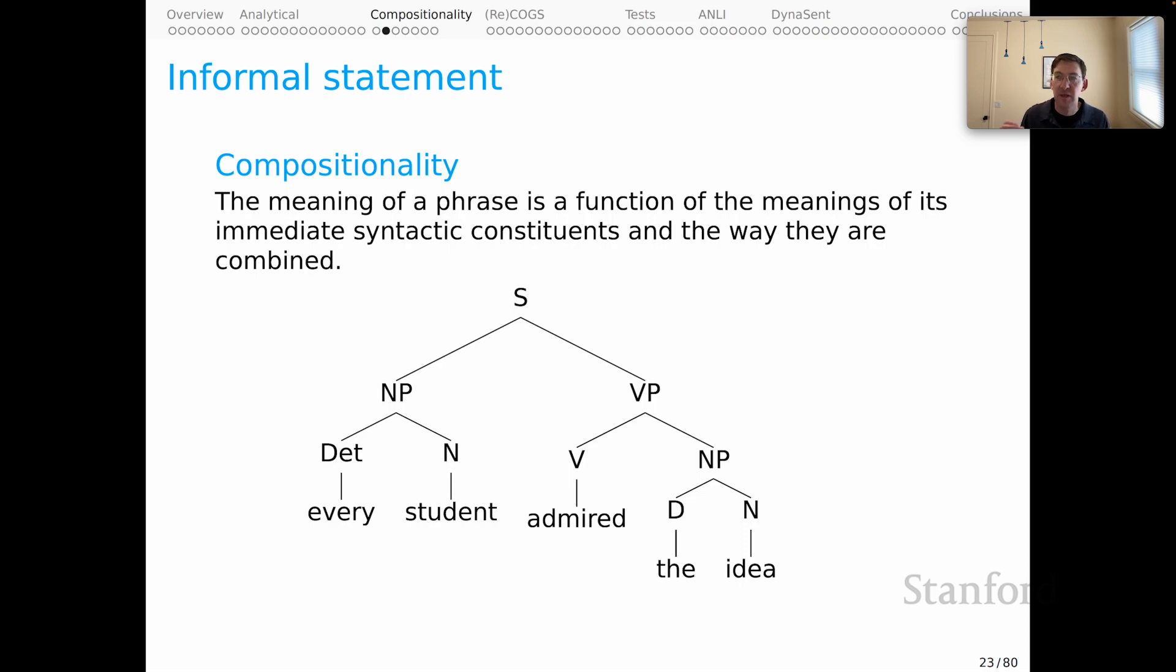The intuition is that you just have to learn all the lexical items of the languages that you speak. Having done that and having figured out how they combine with each other, you have a recursive process that allows you to combine things in new ways and understand novel combinations of these elements. Compositionality is saying that you have guarantee there because the meaning of the whole will be a function of the meaning of the parts and how they are combined.